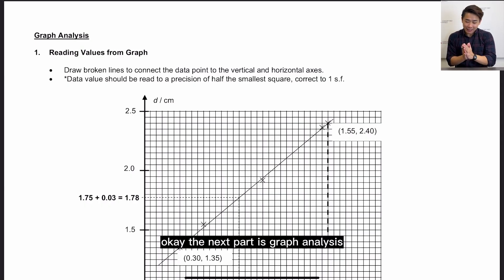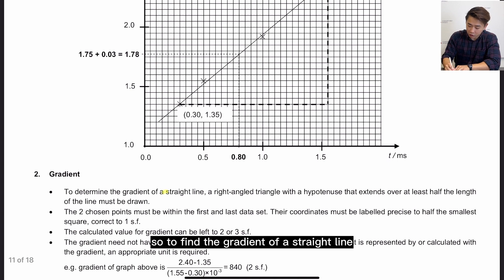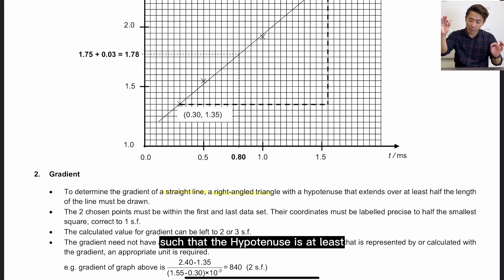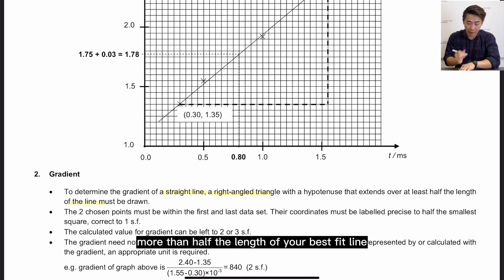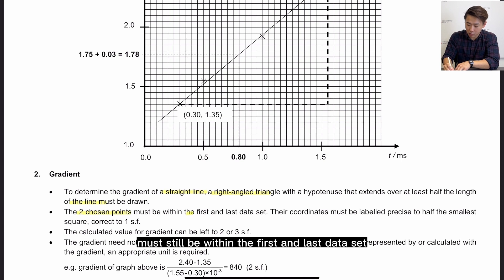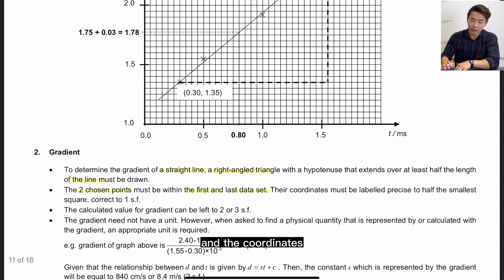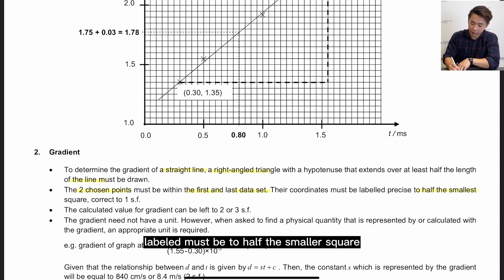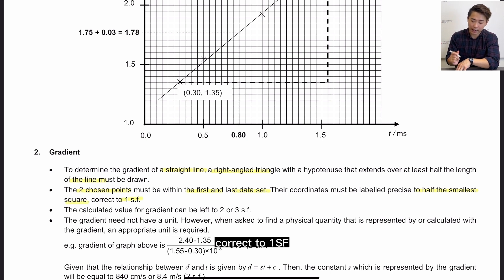Okay, the next part is graph analysis. So one very important thing you are asked to do very often is to find the gradient. So to find the gradient of a straight line, you need to first draw a right-angle triangle such that the hypotenuse is at least more than half the length of your best fit line. This just means they have to be far apart. So the two chosen points you choose, however far apart, must still be within the first and last data set, and the coordinates labeled must be to half the smallest square, correct to 1sf.